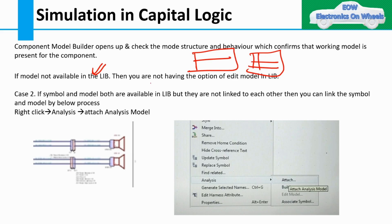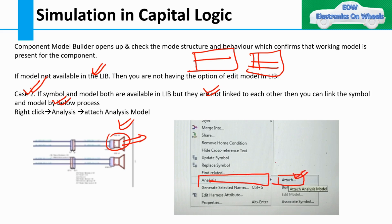If a model is not available in the library, the Edit Model option itself will not appear. When you do Edit Model, you get different pop-ups showing what parameters you have to define in the model. For the second case — if both a symbol and model are available but not linked — you can link them by right-clicking on the component, going to Analysis, then selecting Attach. By this process you can attach a particular symbol to its model.